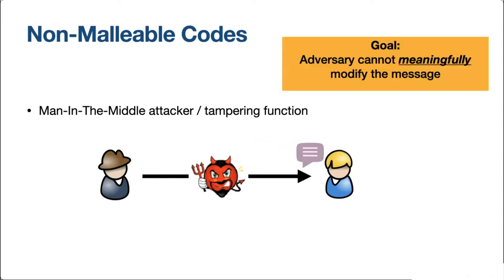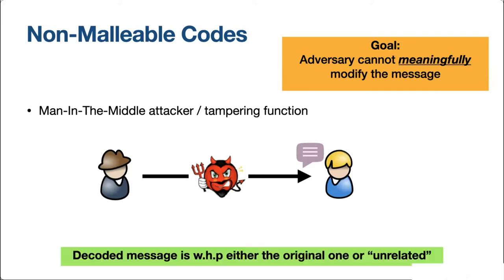What we want to guarantee is that the adversary sitting on the channel cannot meaningfully modify the message. By meaningful modification, we want to ensure that the decoded message the receiver sees is, with very high probability, either the original message intended by the sender, or something completely unrelated. The adversary could always just intercept the message, throw it away, and send something completely random to the receiver. In that case, the received message should be completely unrelated, since it's independent of the underlying codeword.